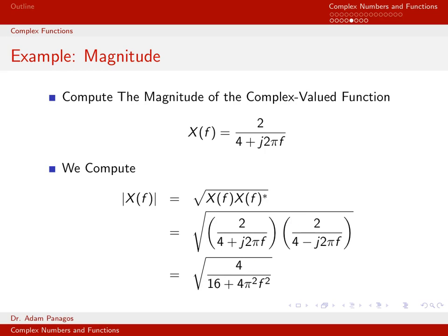Multiplying out: 2 times 2 is 4; 4 times 4 is 16; the cross terms cancel; and j 2 pi f times negative j 2 pi f gives 4 pi squared f squared. So the magnitude of x of f equals 2 divided by the square root of 16 plus 4 pi squared f squared. Notice we are now down to a real-valued function — any time you take the magnitude of a complex-valued function, you must end up with a real-valued function.